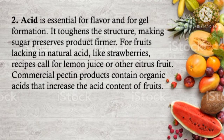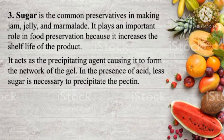The second essential aid is acid. It is essential for flavor and for gel formation. It toughens the structure, making sugar preserve products firmer. For fruits lacking natural acid, like strawberries, recipes call for lemon juice or other citrus fruit. Commercial pectin products contain organic acid that increases the acid content of fruits. The last essential aid is sugar. It is the common preservative in making jam, jelly, and marmalade. It plays an important role in food preservation because it increases the shelf life of the product. It acts as the precipitating agent, causing it to form the network of the gel. In the presence of acid, less sugar is necessary to precipitate the pectin.